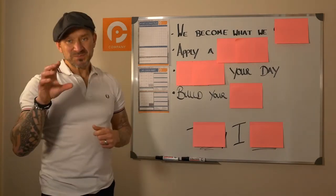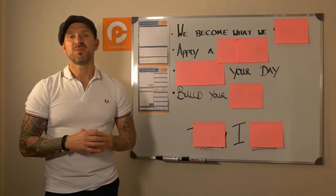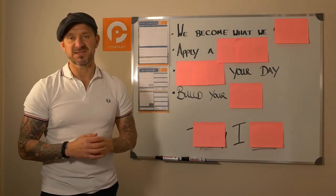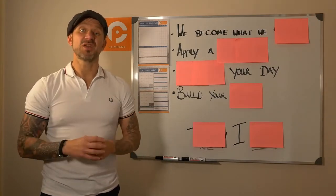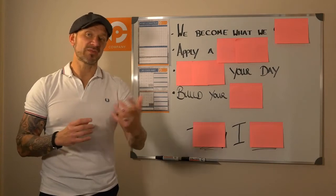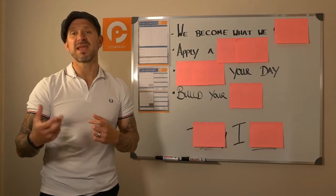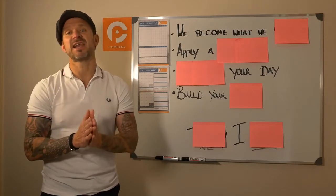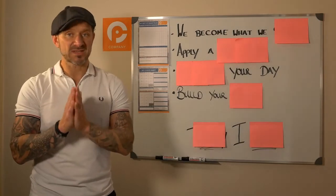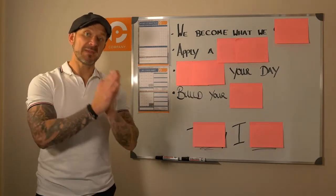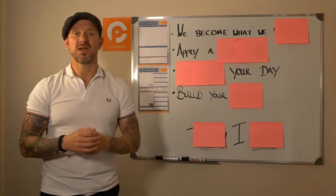So module three — what a great module. This is around habitual consistency. This is the apply bit, the practitioner bit. We've done a lot of theory, we've got a lot of tools, but how do we consistently start to make things happen? And this is the challenge — a real challenging one — because a lot of this is around self-discipline and also making some sacrifices and edging out of our comfort zone.